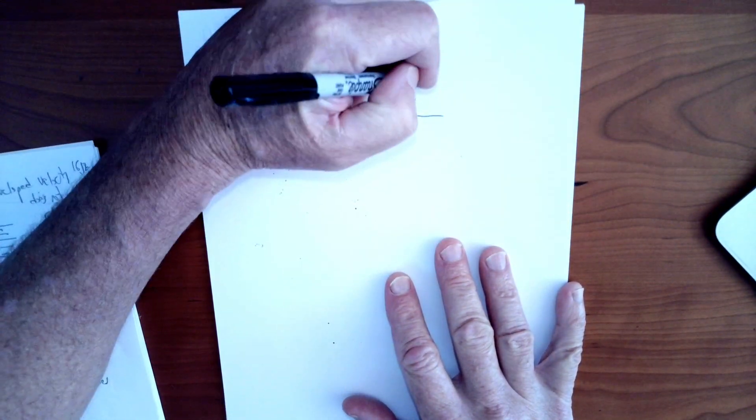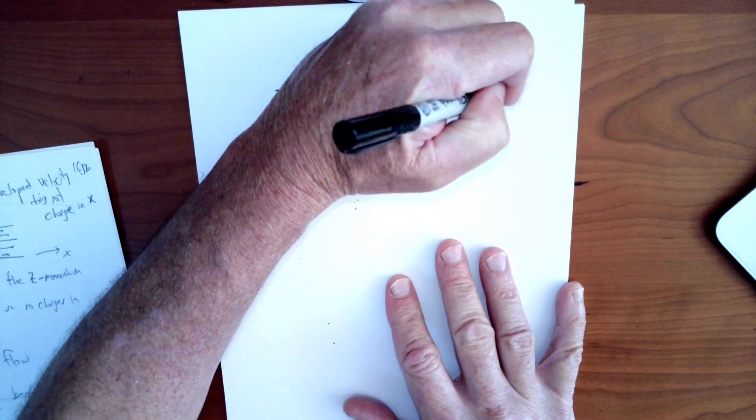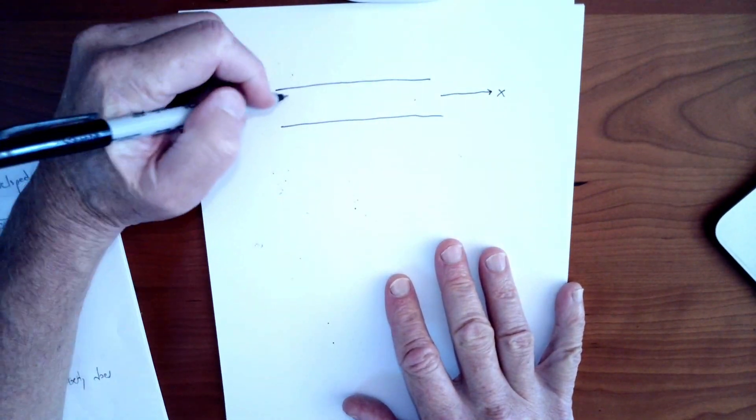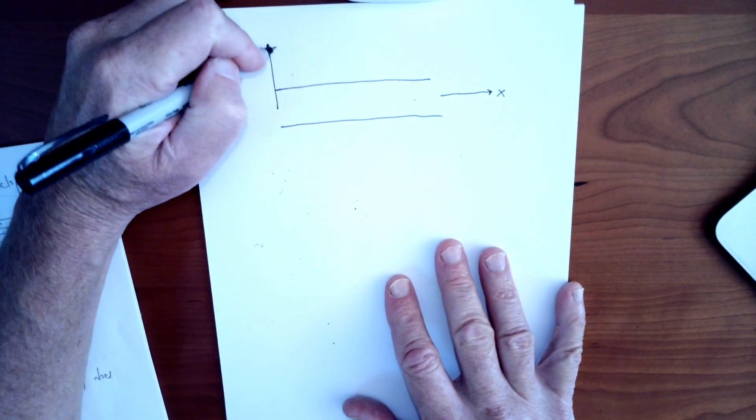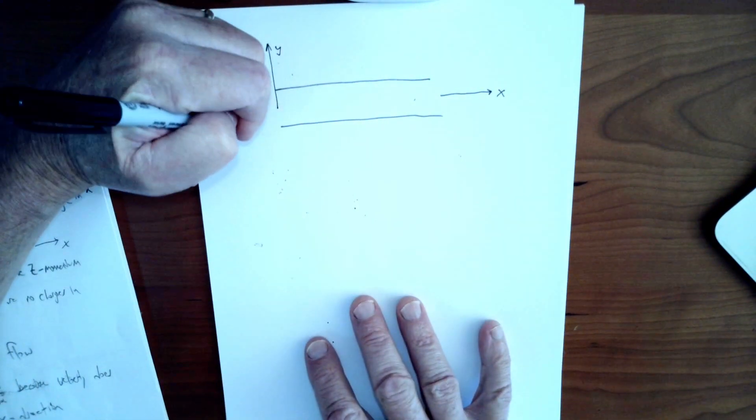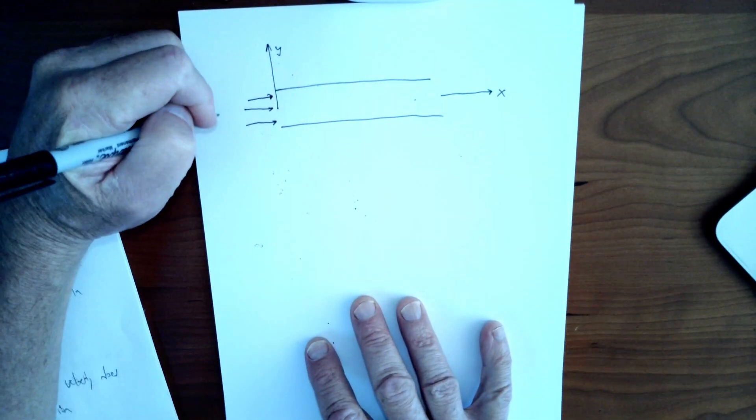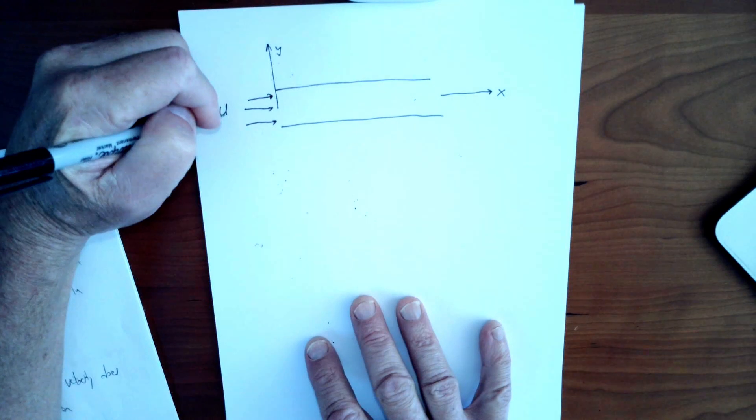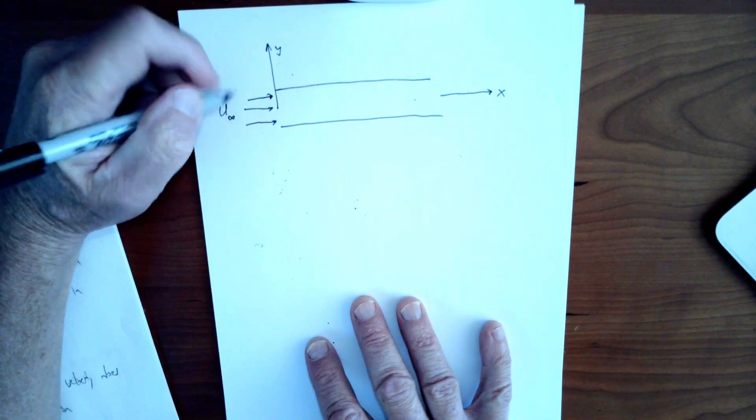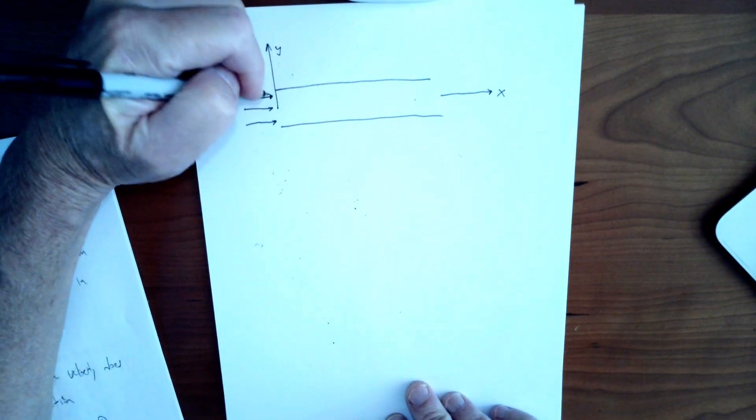We'll draw these plates here. We're going to have x going in this direction, in the direction of flow. This will be y up here, z is in and out of the paper. As the flow enters this channel, it's got a uniform velocity. We can call that U infinity or U naught, but it's uniform. The flow comes in perhaps uniform from some other place and then it hits this channel.